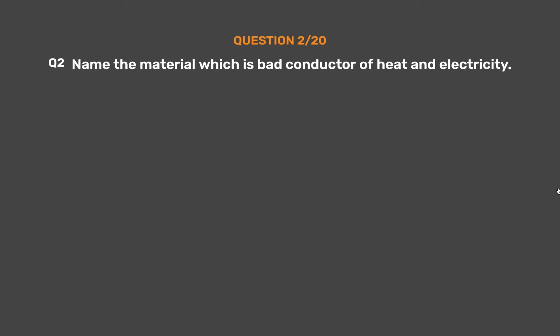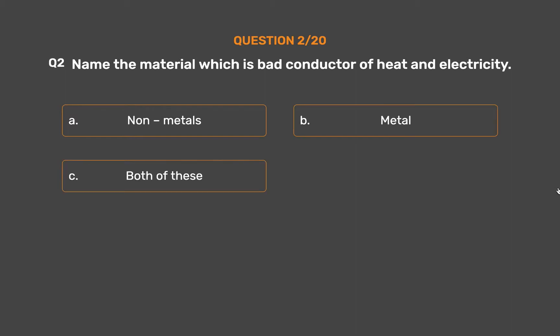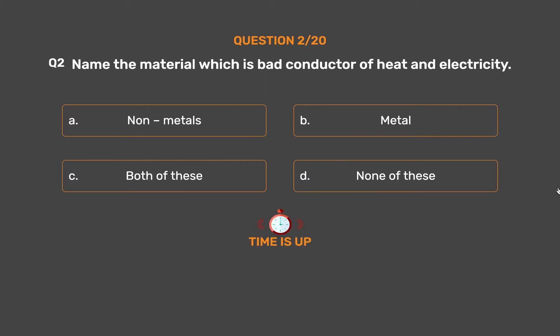Question number 2. Name the material which is a bad conductor of heat and electricity. Option A: Non-metals. Option B: Metal. Option C: Both of these. Option D: None of these. The correct answer is Option A: Non-metals.